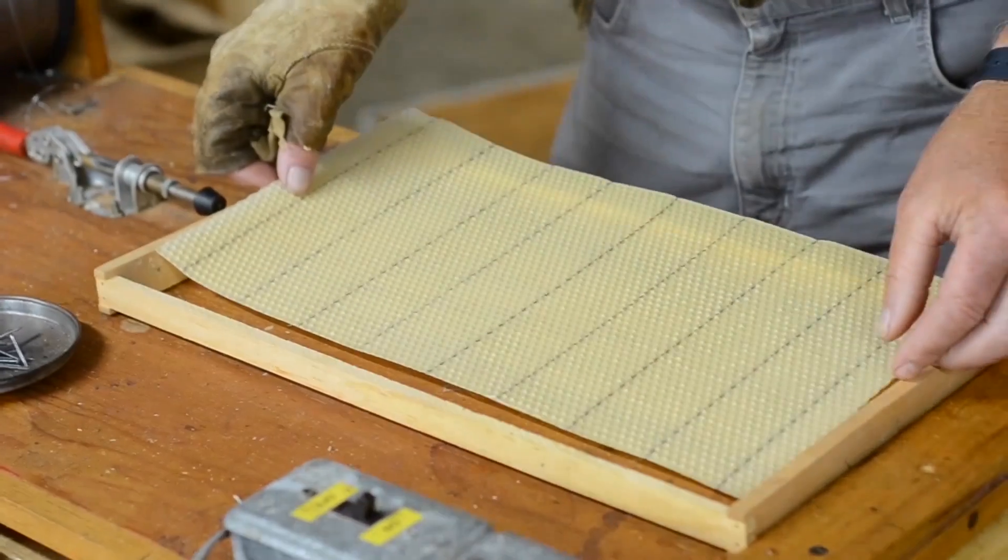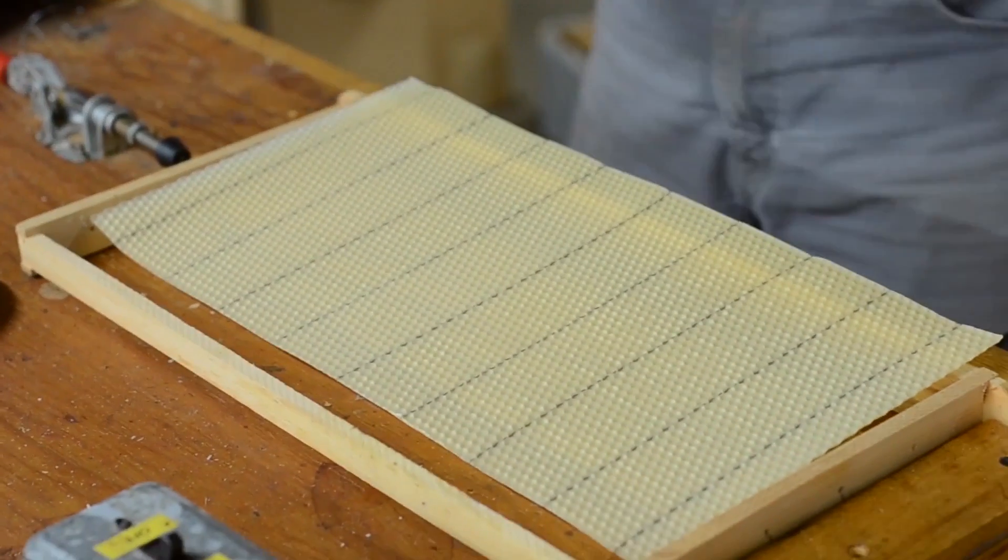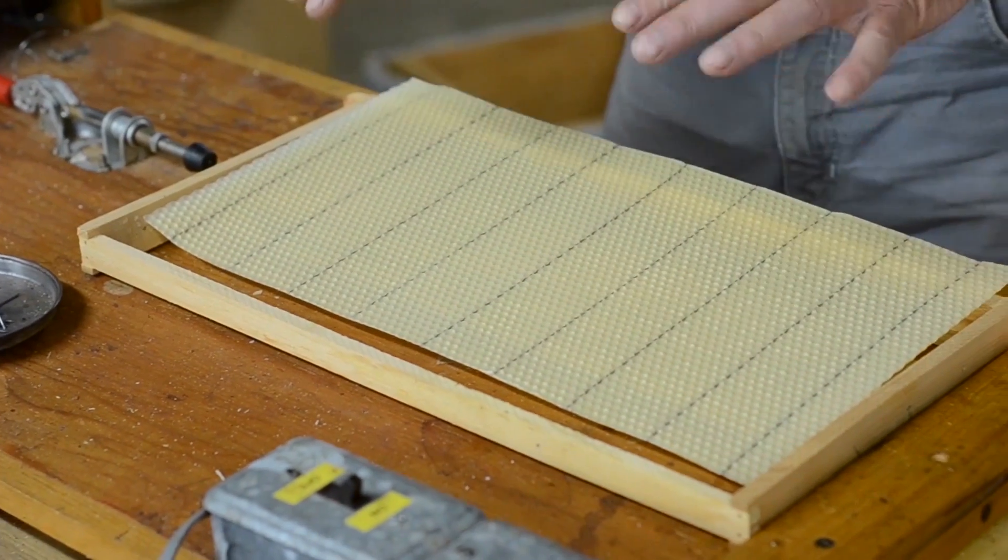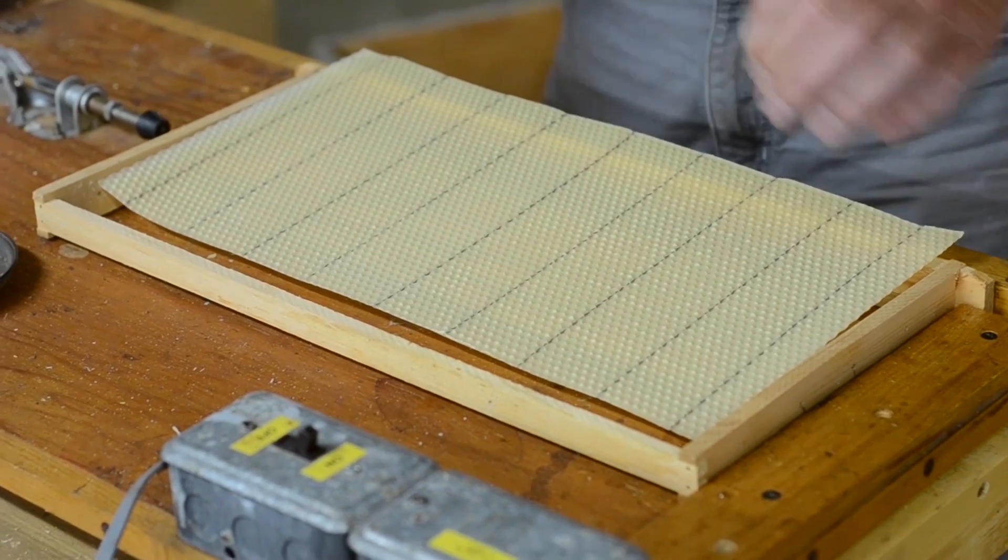It's ideal if you're doing this in a really warm room where the wax is flexible. If it's cold it's extremely brittle and from now on we have to handle these frames really carefully because that wax is brittle especially if it's cold.